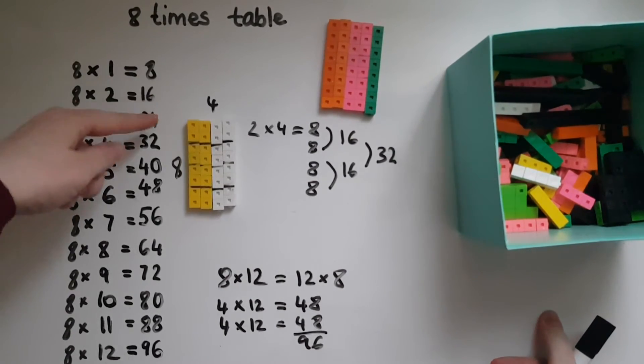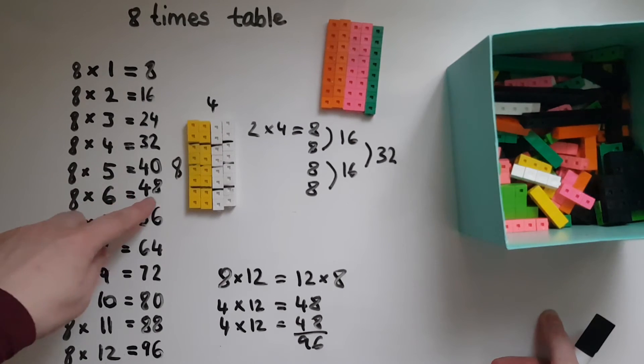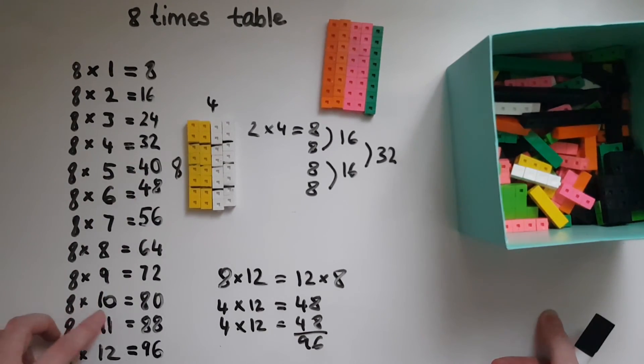You could also use the rule of adding on or taking away 8. So if I know that 8 times 5 is 40, to work out 8 times 6, I just add on another 8. Or if I know that 8 times 10 is 80, just take away a lot of 8, and it's going to give me 8 times 9.